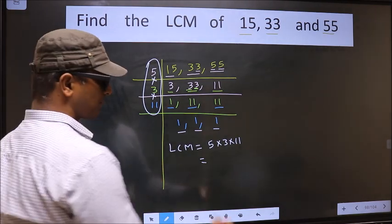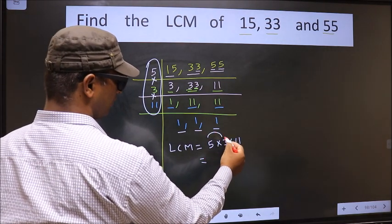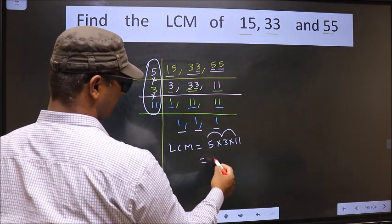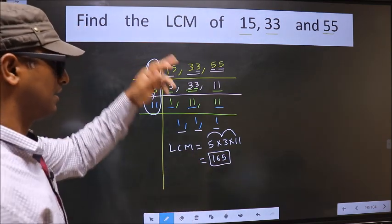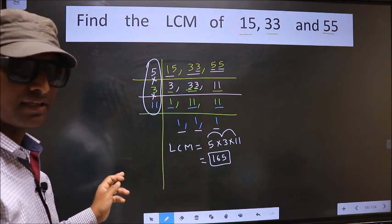That is 5 into 3 equals 15, 15 into 11 equals 165. So 165 is our LCM. Am I clear?